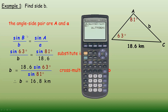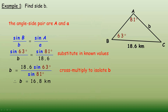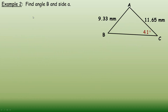On your calculator you might evaluate this in two steps: first compute 18.6 times sine 63 to get 16.57, then divide that by sine 81, which again gives 16.8.